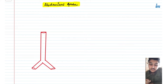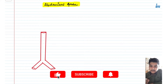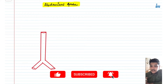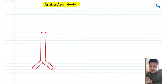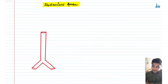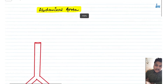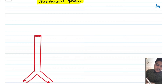So basically, if we see the total aorta, the length of the total aorta is from T4 to L4. When the aorta comes out of the aortic hiatus of the diaphragm, it is referred to as the abdominal aorta. That aortic hiatus is at the level of T12, therefore the length of the abdominal aorta is from T12 to L4.